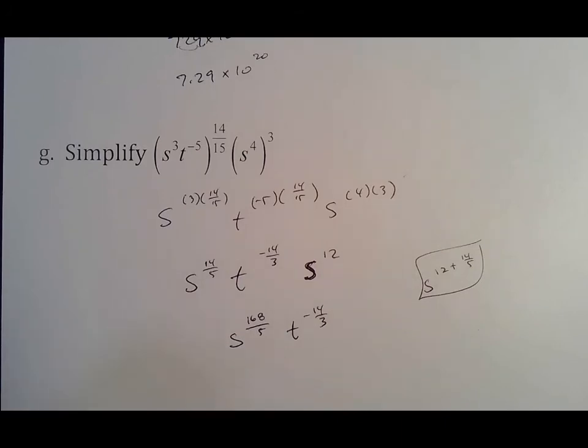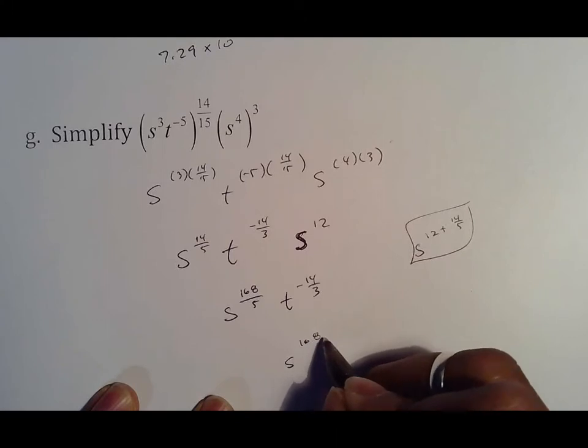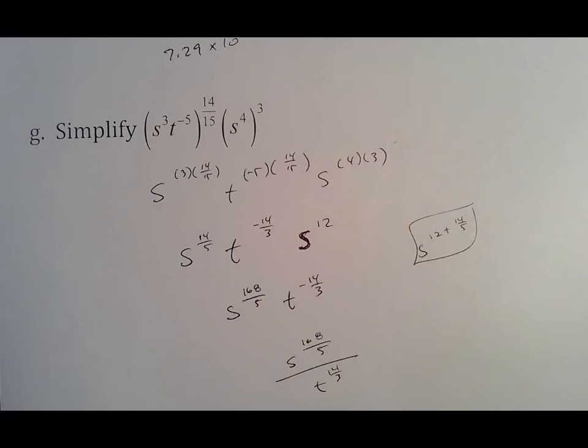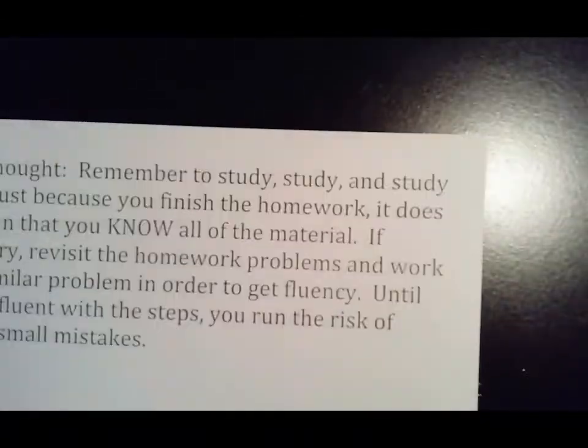Still not done. There's one more rule that's being broken that we cannot break, and that is the rule of a negative exponent. Which means in the end we end up with s to the 168 over 5, over t to the 14 thirds. Yes, it's ugly, but you have to know your rules. That is why I said in the very first thing to make sure you start working on your rules, because you have to know them instinctually. You have to know when to add, when to multiply, when to cancel, which would be zero power, and when to move it, which would be a negative power or negative exponent.